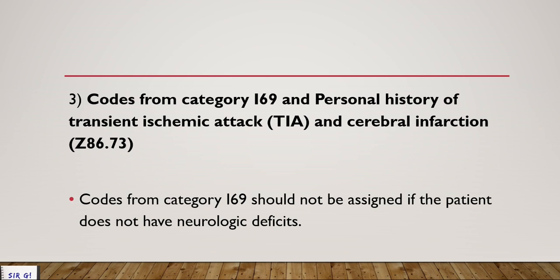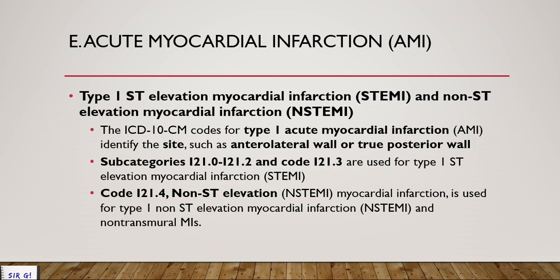Code for category I-69 and personal history of transient ischemic attack: if the neurologic deficit has already healed, we can consider it personal history and use Z-86.73, personal history of transient ischemic attack and cerebral infarction. Codes from category I-69 should not be assigned if the patient no longer has neurologic deficits. Therefore I-69 can never be coded together with Z-86.73. Always check your scenario — is there a still existing neurologic deficit or has it resolved?